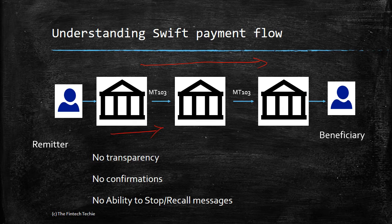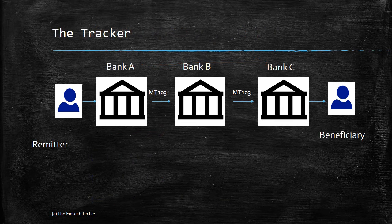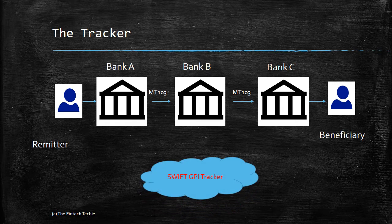So to solve all this, Swift came up with — yes, it's called innovation — so it's called GPI, Global Payment Innovation. So how did they go about solving this? It's actually quite simple. In the same scenario where the payment is transmitted over bank A, B and C, all you need to do is to ensure that every bank on the payment chain is sending across a kind of a confirmation to a central repository called the GPI tracker.